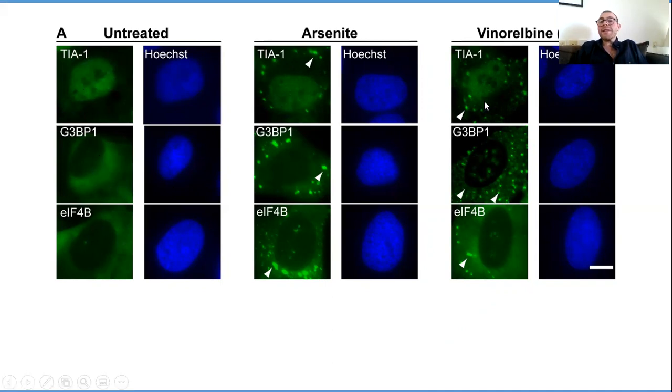For our study, we looked at chemotherapy known as vinorelbine, or VRB, and when we treat our cells with VRB, we see these stress granules begin to form.